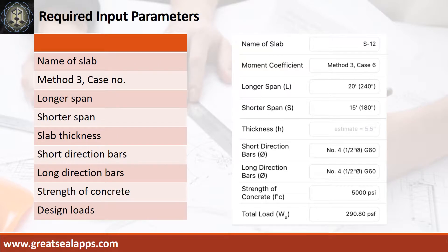Enumerate input parameters required: name of slab S12, case 6 panel design, longer span 20 feet, shorter span 15 feet, slab thickness 5.5 inches, main bars half-inch diameter at grade 60, strength of concrete 5,000 PSI, and total load 290.8 PSF.